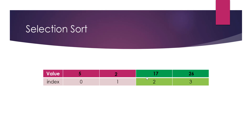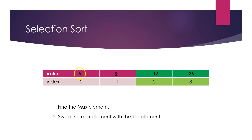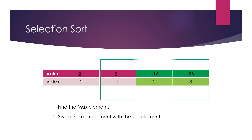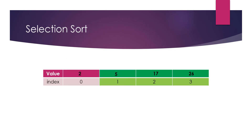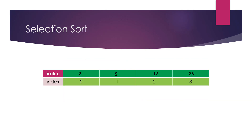17 and 26 are in their correct positions. We now look at the remaining unsorted part and find the maximum element, which is value 5 at location 0. We swap it with the element at location 1. Now we only have one element left unsorted, and since there's nothing to compare, the full array is now sorted.